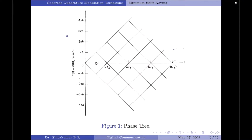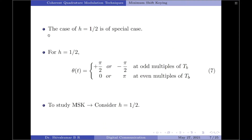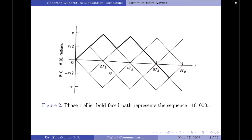At odd multiples of T_B, the phase is ±πh, and at even multiples of T_B, it is ±2πh. Since all phase shifts are modulo 2π, the case h = 1/2 is of special interest. For h = 1/2, the phase can take only two values — +π/2 or −π/2 — at odd multiples of T_B, and only two values — 0 and π — at even multiples of T_B. This representation is shown in figure 2, called a phase trellis, since a trellis is a tree-like structure but with re-merging branches.